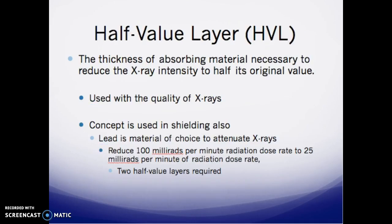The half value layer requires 3 millimeters of aluminum equivalent — it's the thickness of absorbing material necessary to reduce x-ray intensity to half its original value, used to assess x-ray quality. For shielding, lead is the material of choice. Example: to reduce a 100 mrad/min dose rate to 25 mrad/min, you need two half value layers — first halving 100 to 50 mrad/min, then halving again to 25 mrad/min.